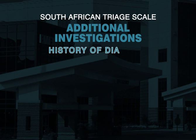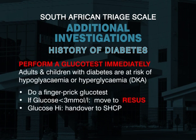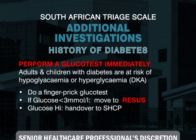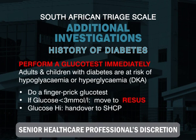If the glucose is high, hand over to the senior healthcare professional. For patients with a history of diabetes, perform a glucose test immediately. Adults and children with diabetes are at risk of hypoglycemia or diabetic ketoacidosis. If the glucose is less than 3 millimoles per litre, move to the resuscitation area and hand over to the senior healthcare professional. If the glucose is high, hand over to the senior healthcare professional.